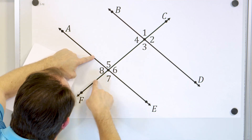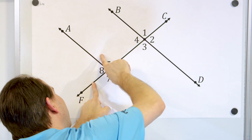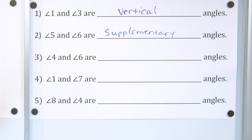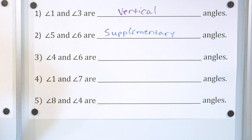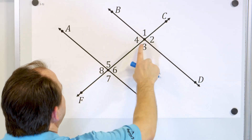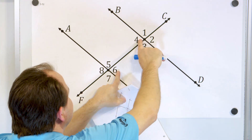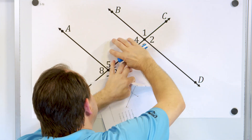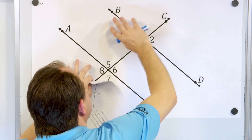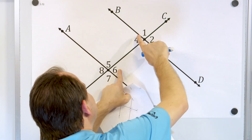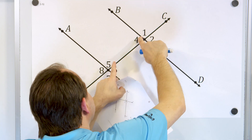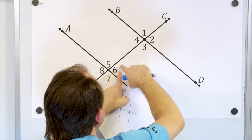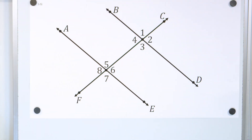Angle eight and angle seven are also supplementary, and angle eight and angle five are supplementary too — there are lots of supplementary angles in this picture. Now let's take a look at angle four and angle six. These are called the interior angles of this setup because they're on the inside, while others are exterior angles because they're on the outside. Angle four and angle six are called alternate interior angles — alternate because they're on opposite sides of the line.